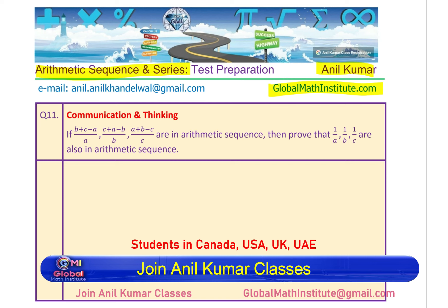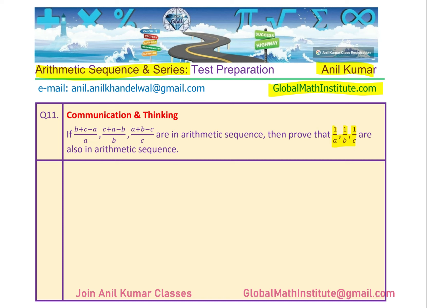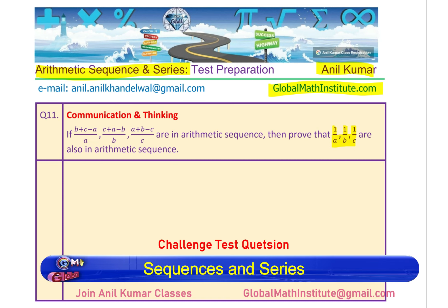The question is: if (b + c − a)/a, (c + a − b)/b, and (a + b − c)/c are in arithmetic sequence, then prove that 1/a, 1/b, and 1/c are also in arithmetic sequence.